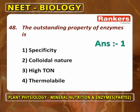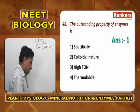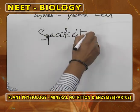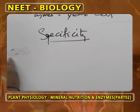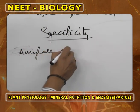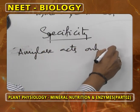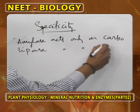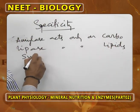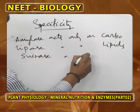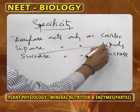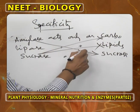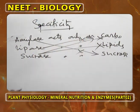The outstanding property of any enzyme is its specificity. Amylase acts only on carbohydrates, lipase acts only on lipids, and sucrase acts only on sucrose. Sucrase cannot act on lipids or carbohydrates other than sucrose. Amylase cannot act on sucrose, and lipase cannot act on carbohydrates.